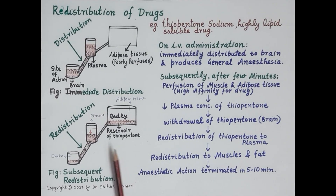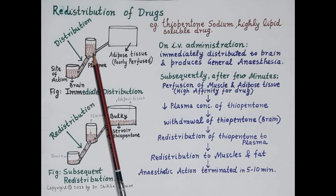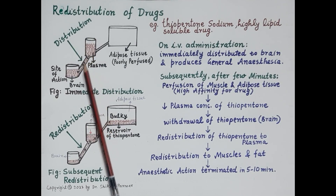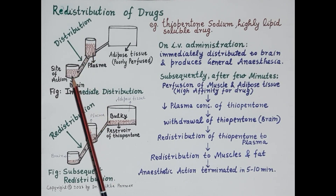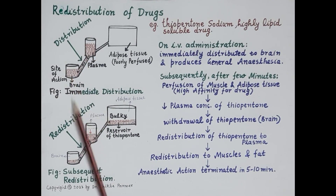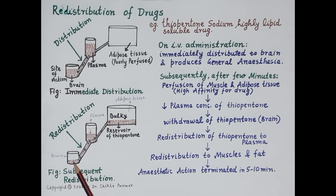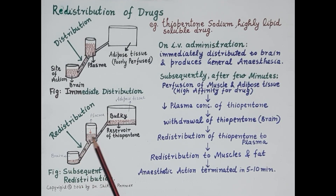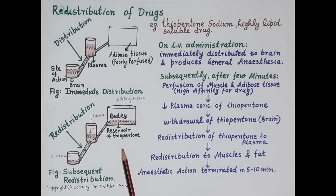In summary, distribution is the movement of drug from blood to the tissue, while redistribution is the movement of drug from the tissue back to the blood or back to the plasma. This is, in brief, the phenomenon of redistribution.